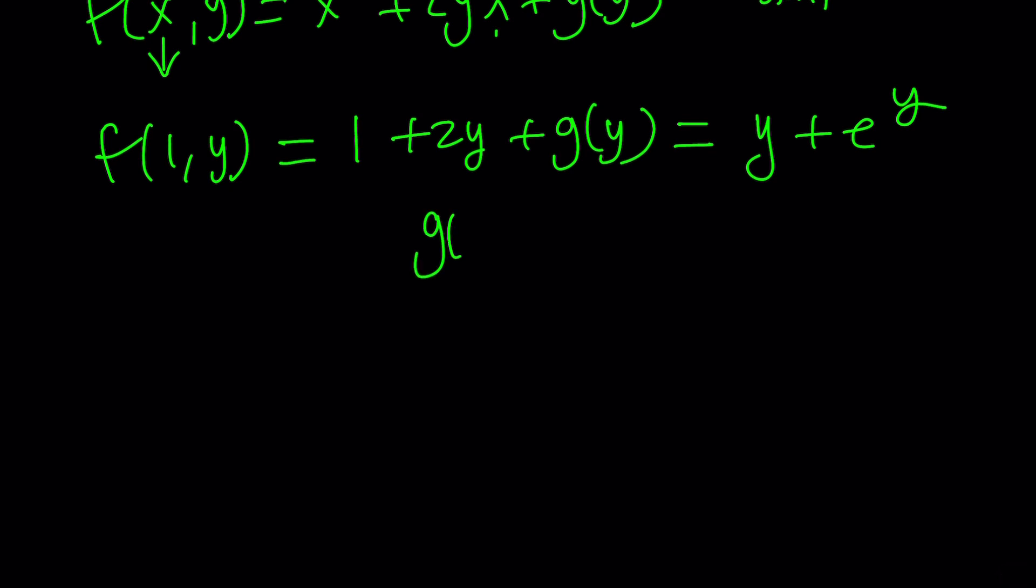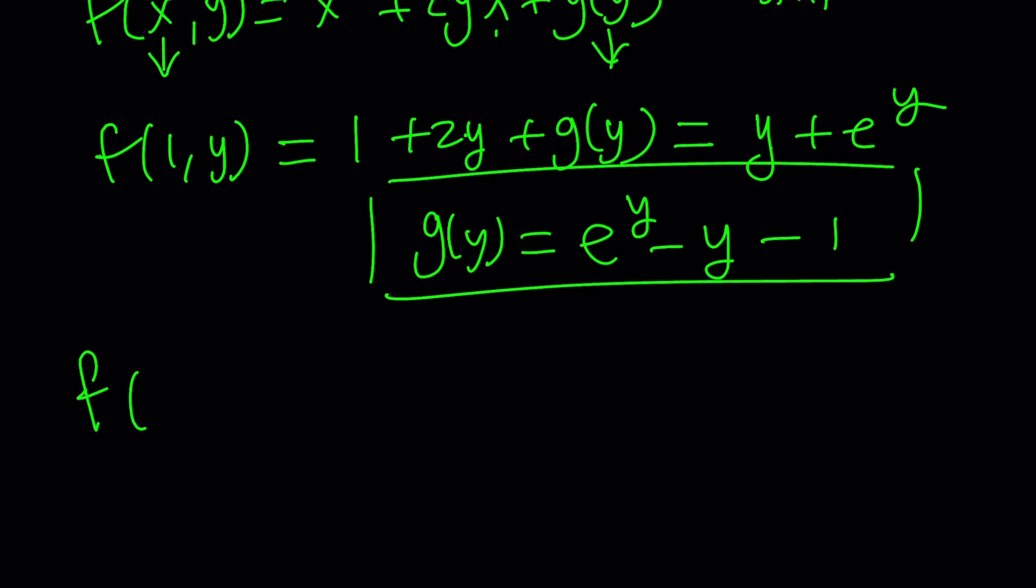Because if you isolate it, you're going to subtract 2y from y. It'll be e^y - y - 1. And since this is g(y) and in the original solution we have that, we can go ahead and put it back, like substitute. x³ + 2yx + e^y - y - 1. This should be the entire solution. Again, we were given an initial condition so we could determine what that constant is at the end.